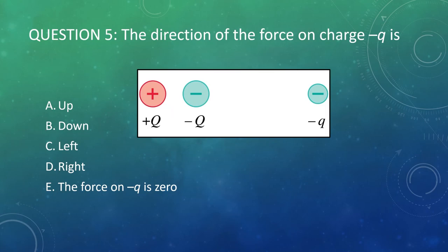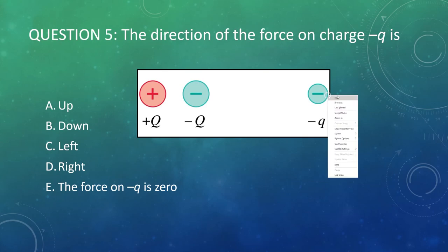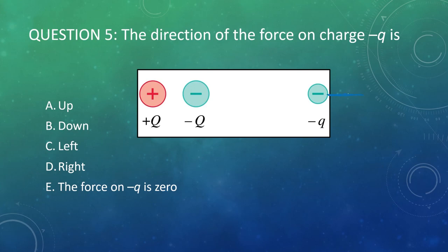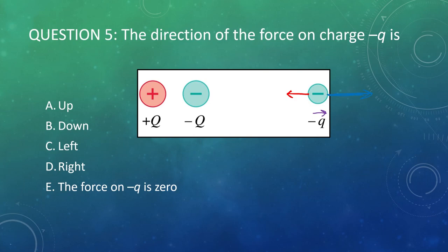One more: the direction of the force on minus q. The negative charge here is going to repel the other negative charge — a blue arrow pushing it away. There's also a positive charge present that's going to attract the negative charge toward it, but that one is further away, so the force is weaker — a smaller arrow. The big blue arrow wins out over the small red arrow, so the overall force points to the right — answer D.